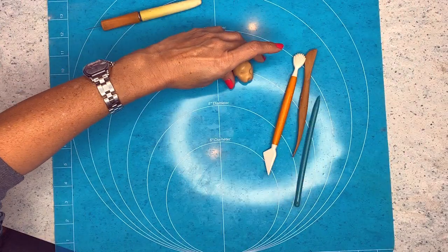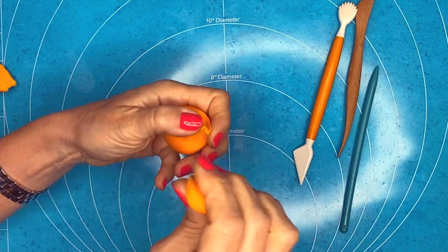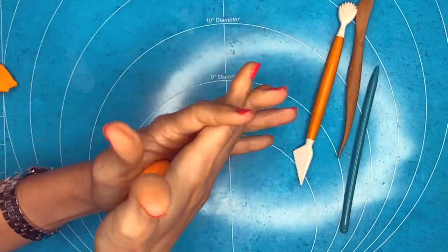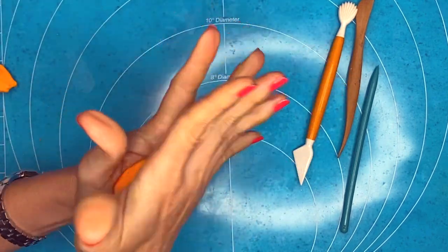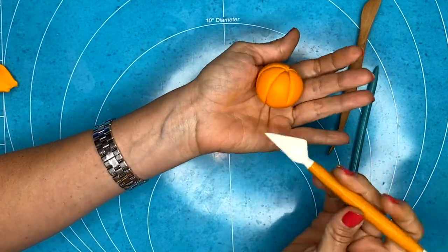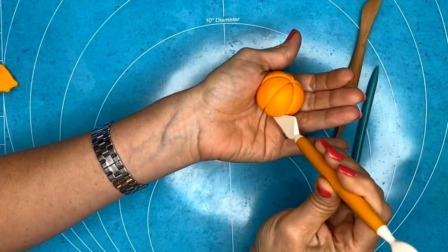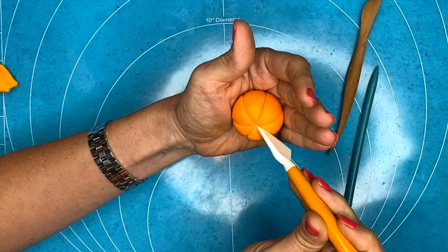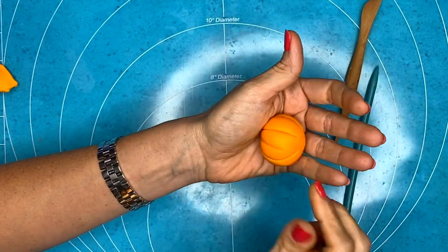Next I have some orange fondant and I am going to shape it into a pumpkin. So make a big ball at first and then with this tool I created the little lines around the pumpkin.